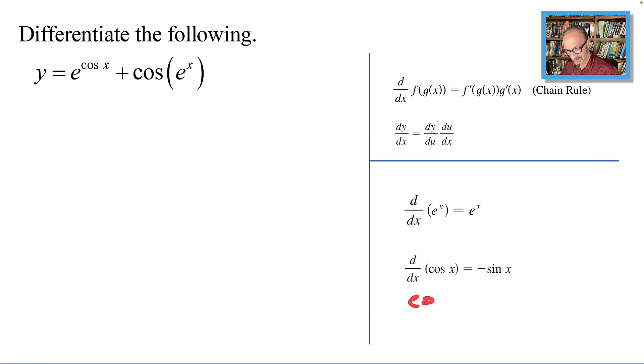And if you have cosine u instead of x, and we want to differentiate that, that will give me minus sine u times u prime.